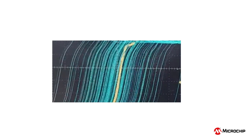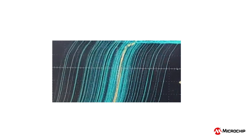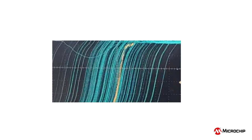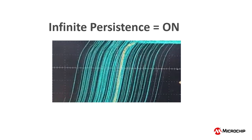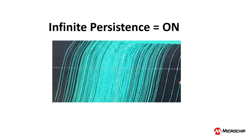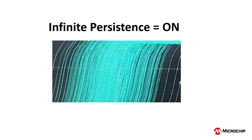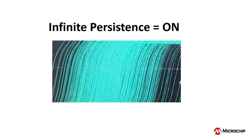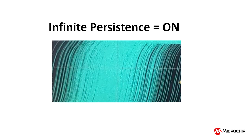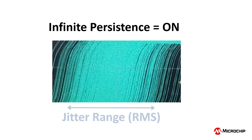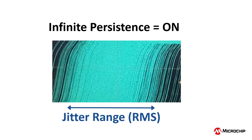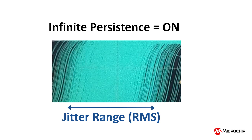If we turn on infinite persistence, we can see the approximate range of the jitter. There is actually a way to calculate the RMS value of this range of jitter based on the phase noise plot of the clock, which we will discuss in the next video.